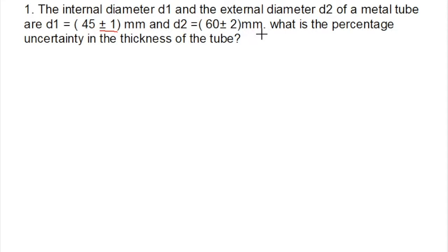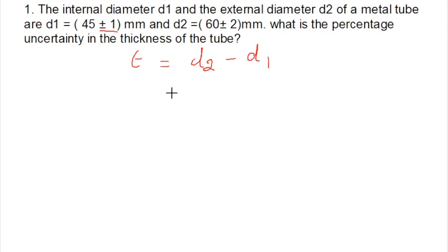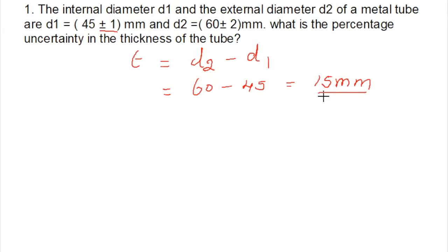The question asks: what is the percentage uncertainty in the thickness of the tube? The thickness T can be found by subtracting D2 minus D1. So the actual value of the thickness will be 60 minus 45, which equals 15 mm.